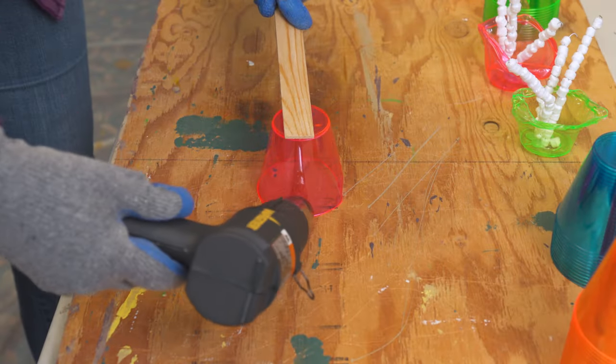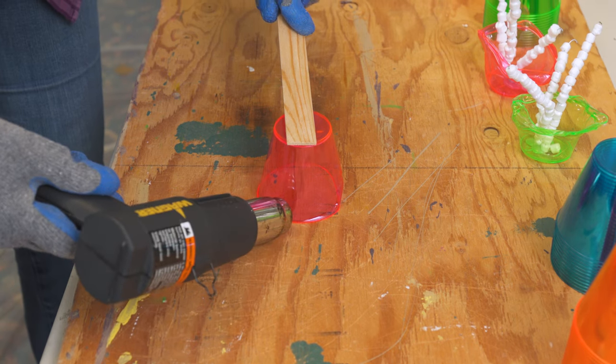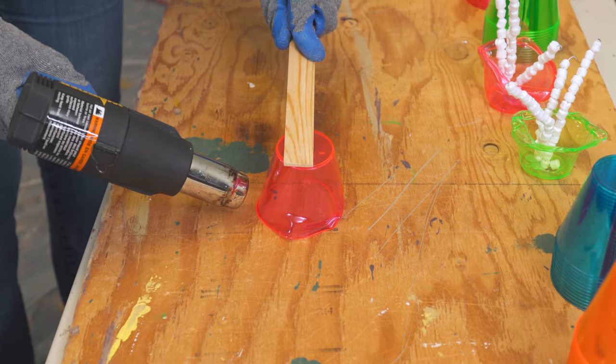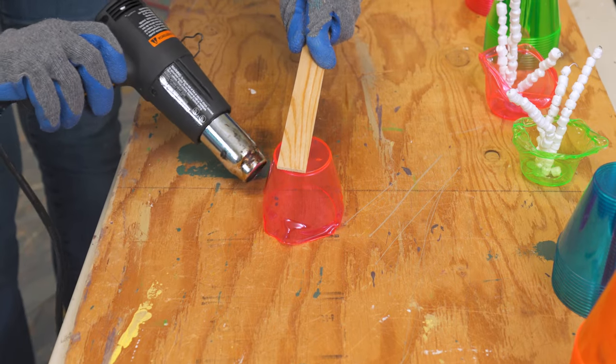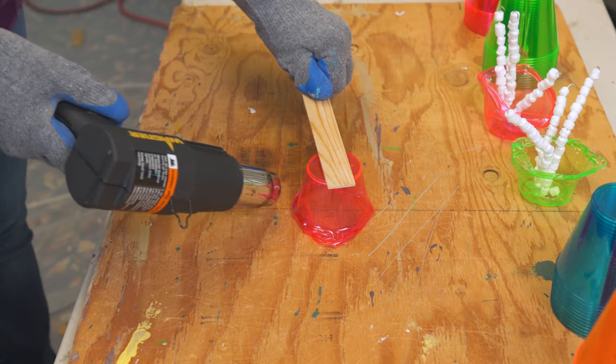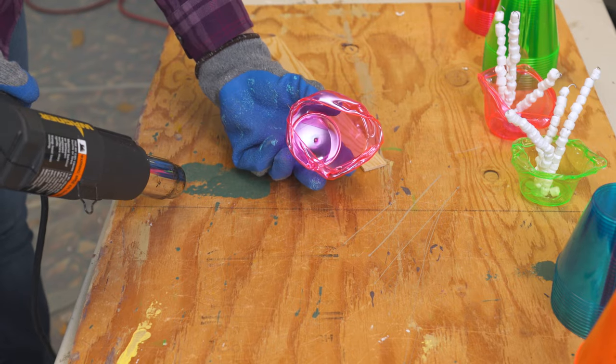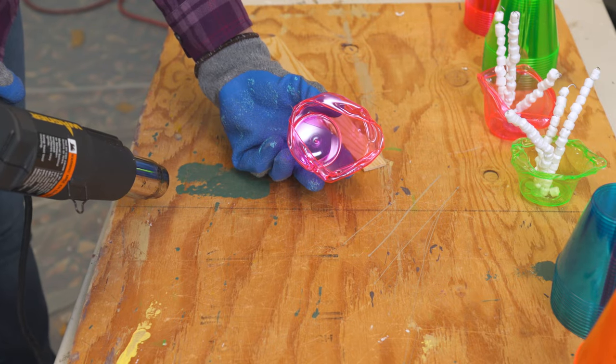First, place a plastic neon cup on a heatproof surface. Now use a heat gun to carefully melt down the edges of the cup. While the cup is still hot, use a paint stick to press down the edges in a wavy, rich pattern, then set it aside to cool.